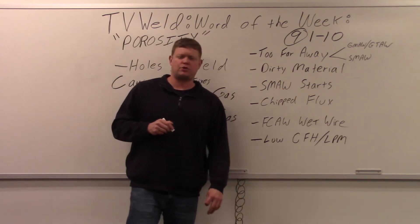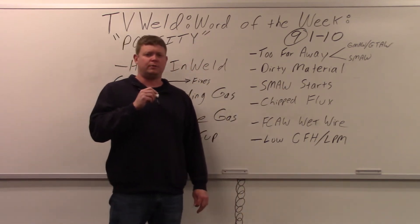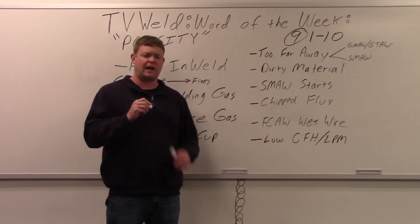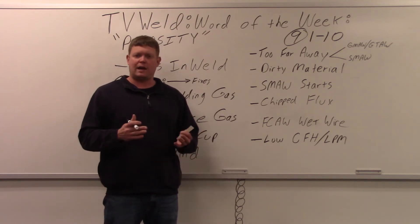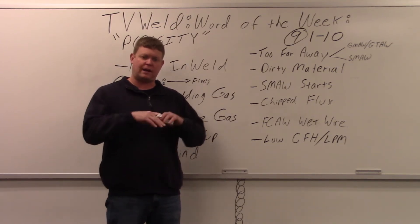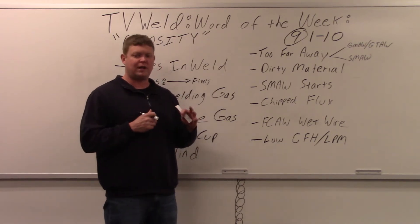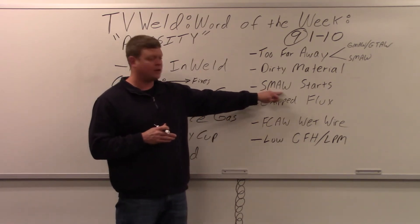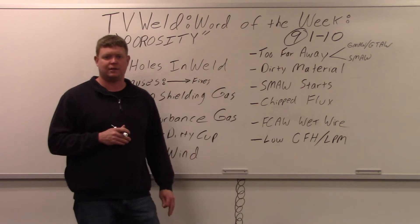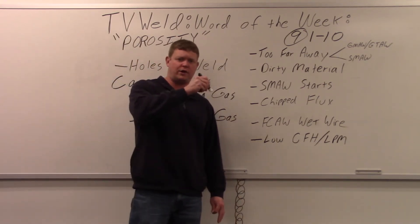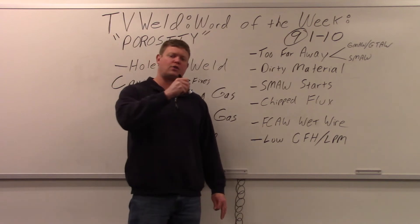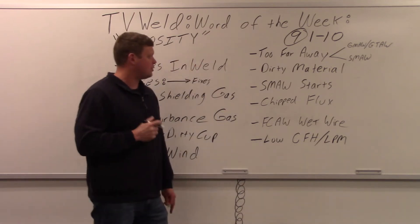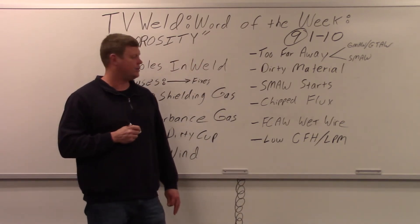SMAW arc starts are a cause of porosity. When you strike an arc with 7018, you'll get a little porosity at the arc strike because there's no shielding established before the arc. With MIG and TIG you can set a pre-purge, but with stick it has to establish its own shielding. The fix is to strike the arc ahead, back up, and then run the arc strike over your arc start to draw that porosity out.